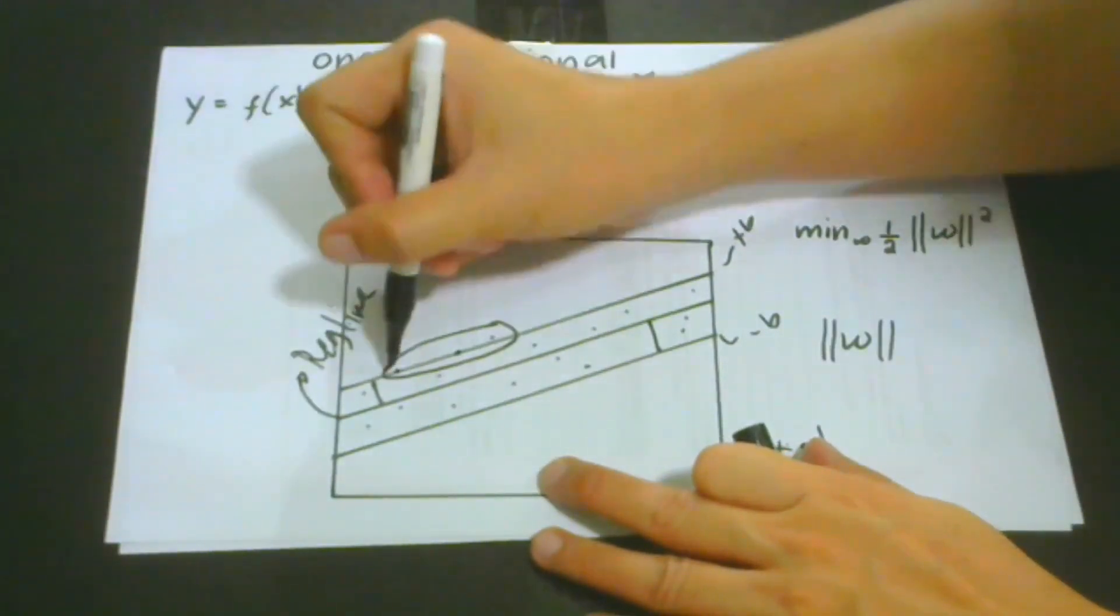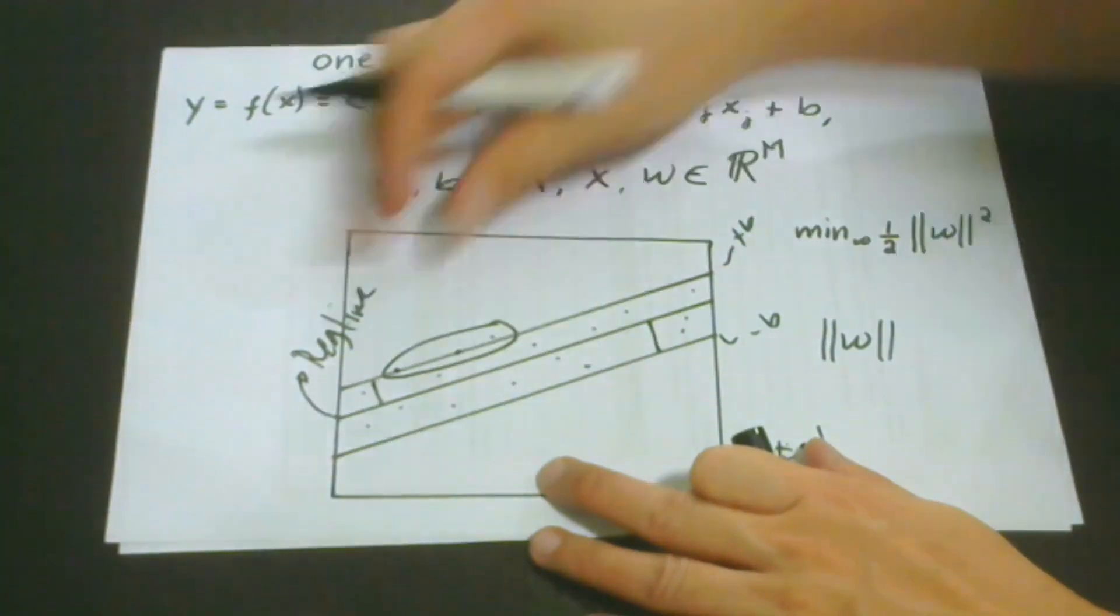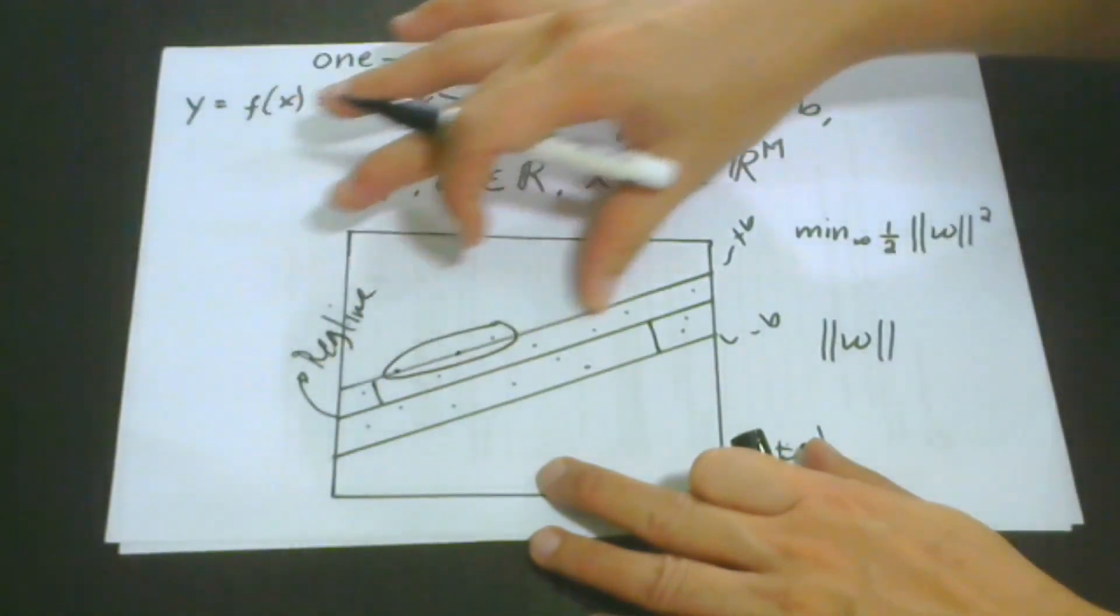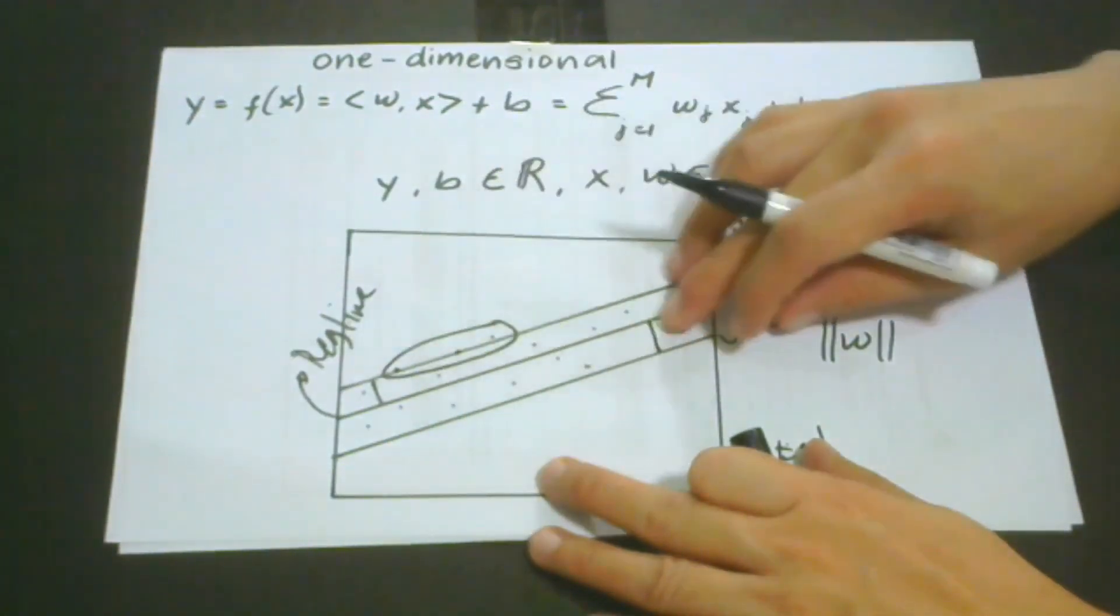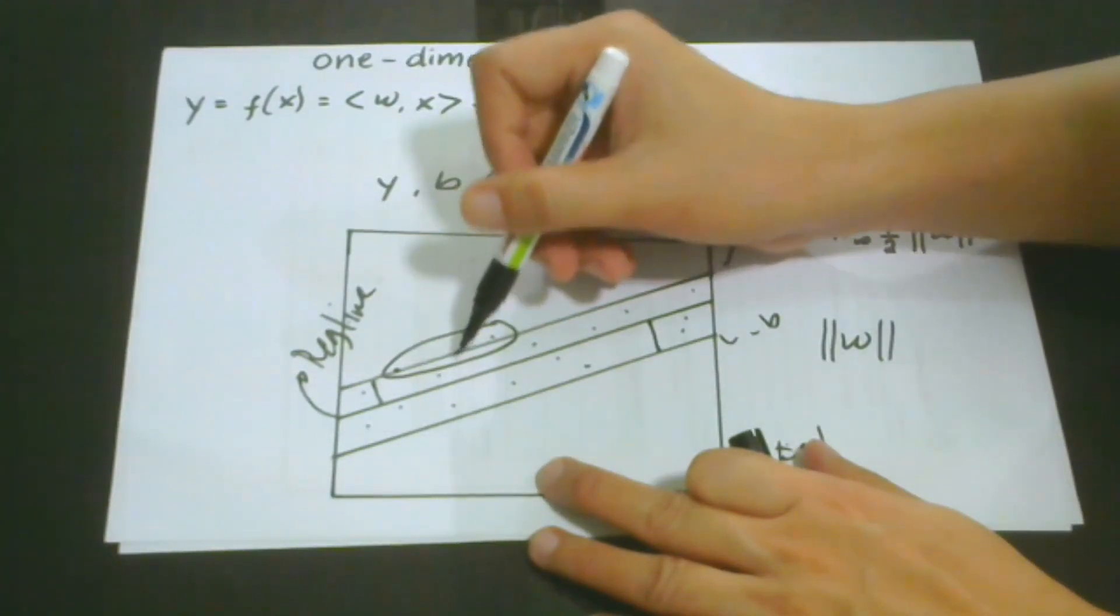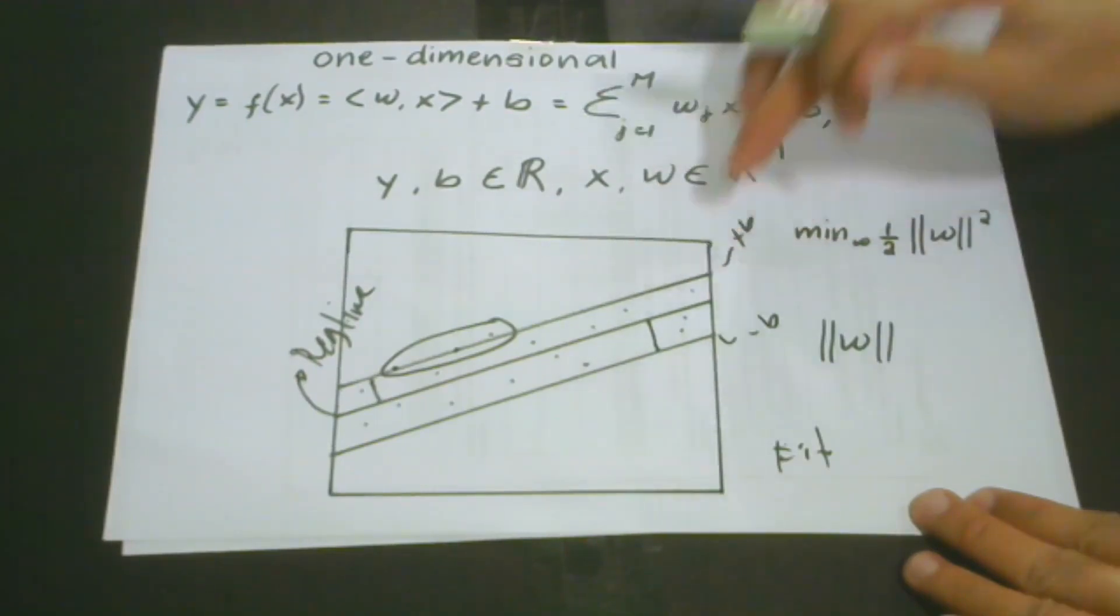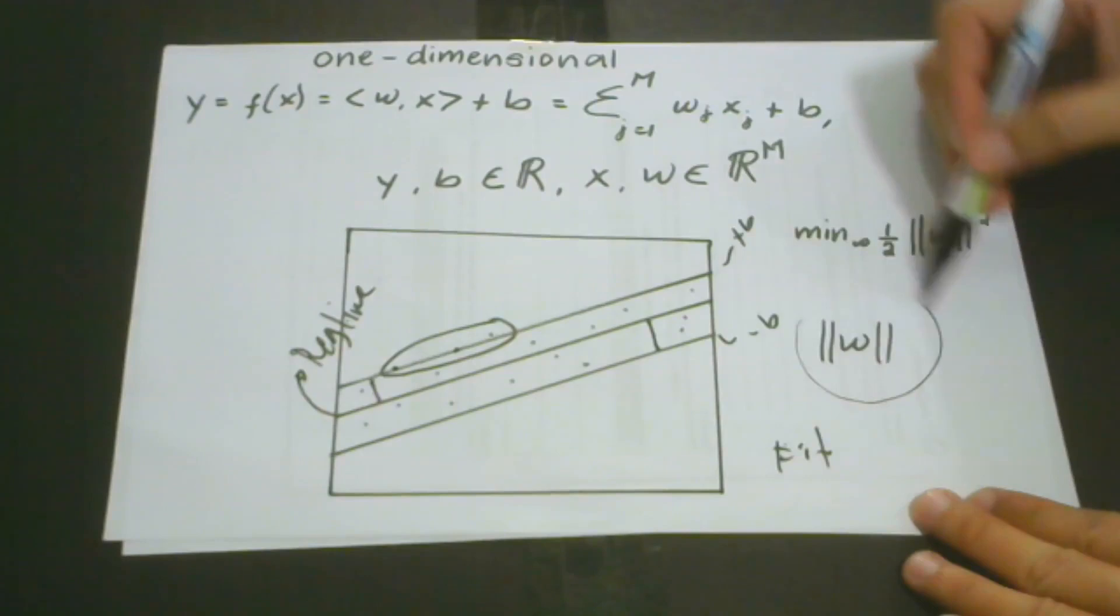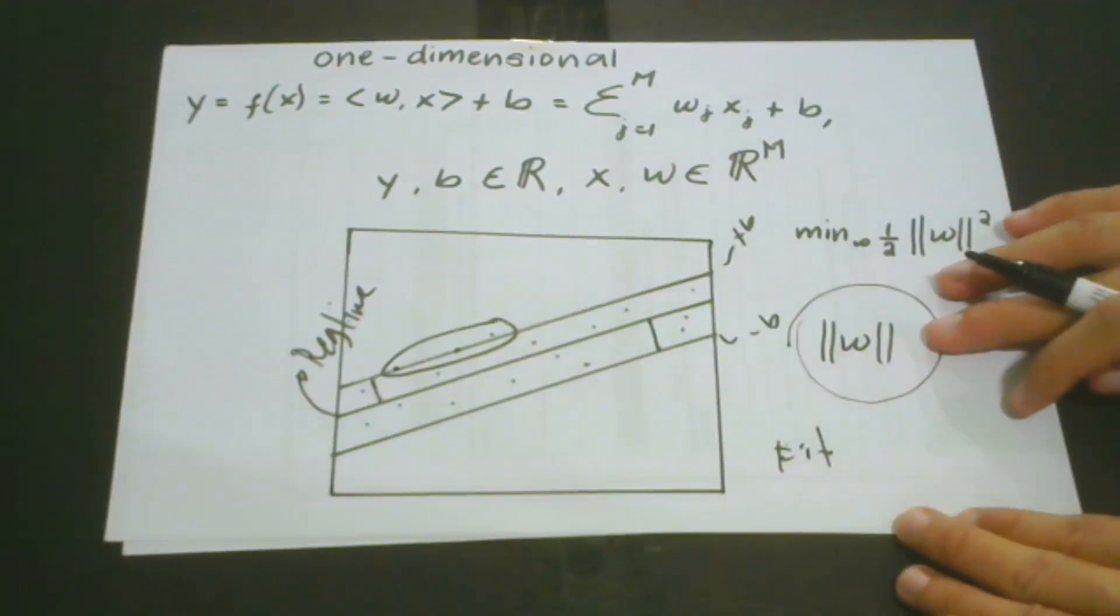When we say support vectors, these are the different data points within these certain thresholds that can be considered for our prediction. From this point, as far as these points are concerned, we are getting the approximation function. This approximation function also produces an objective function.